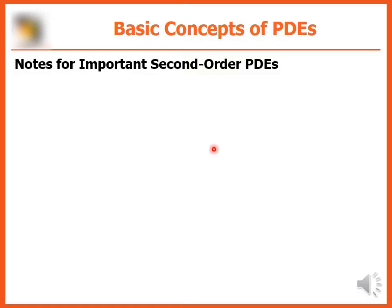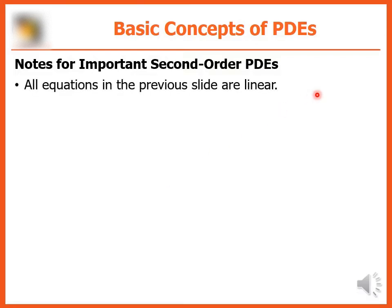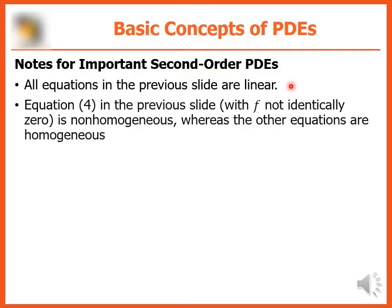Notes for important second-order PDEs from the previous slide: all equations are linear. Equation 4 in the previous slide, with f not identically zero, is non-homogeneous, whereas the other equations are homogeneous.